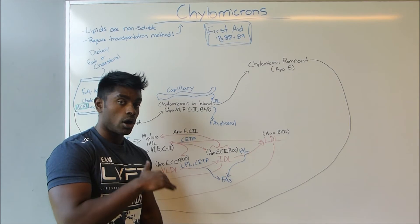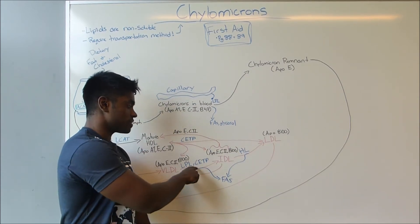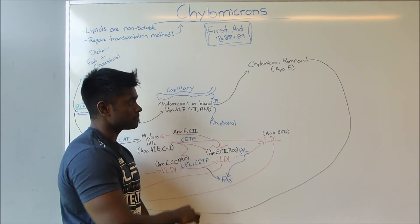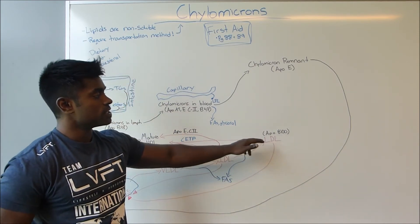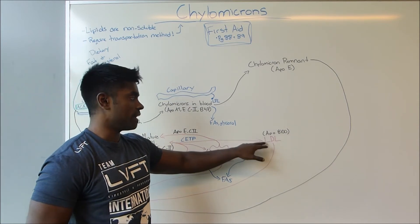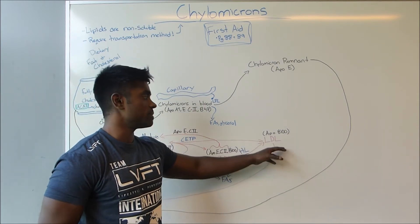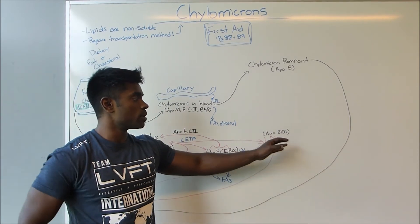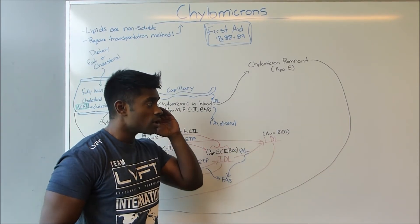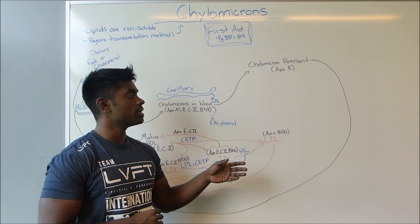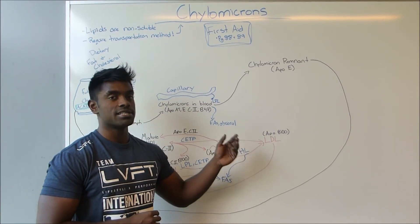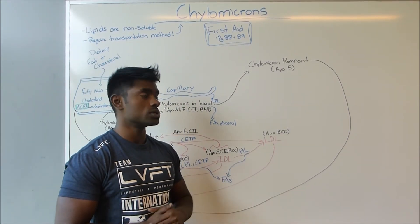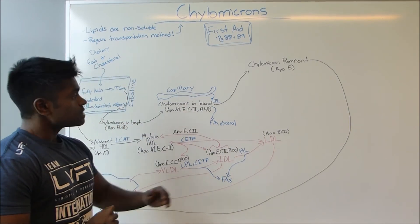You're left with a structure called LDL which, as we can see, has a lot less triglycerides as fatty acids have continuously been dumped out and an increase in cholesterol. In First Aid they say LDL stands for lousy, which makes sense because this structure has a large amount of cholesterol inside of it. This protein can get stuck into the walls of the capillaries and as a result can lead to atherosclerosis.